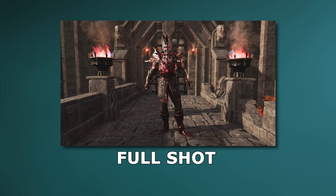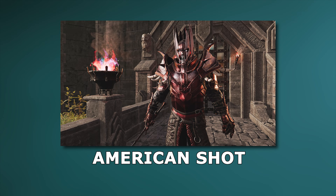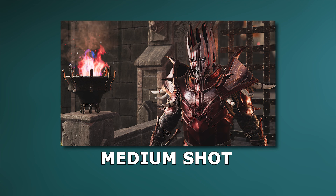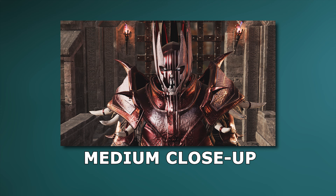Full shots show a character or a group of characters in full height. American shots show the characters from the mid-thigh up. Medium shots show the characters from the waist up, and it is the most common shot for dialogue scenes. Medium close-up shows the characters from the elbows up.